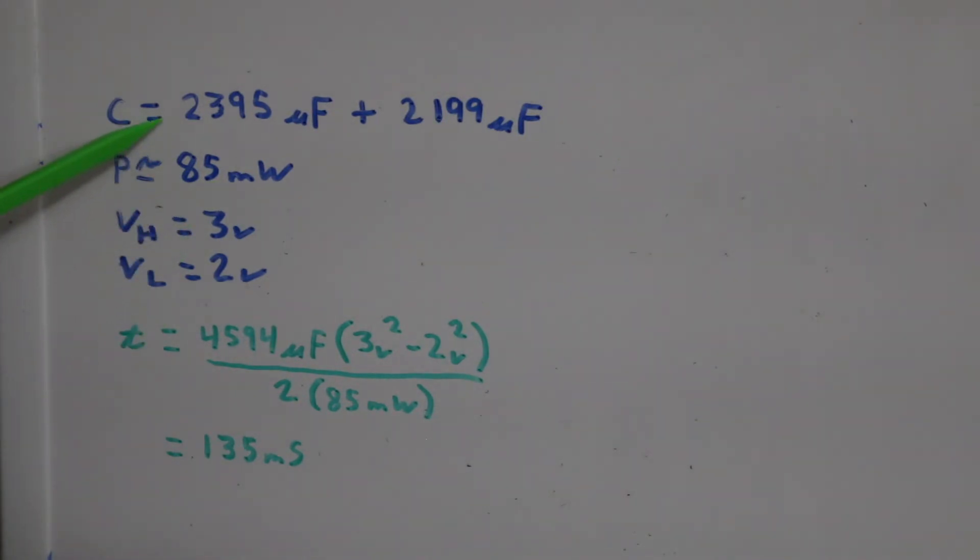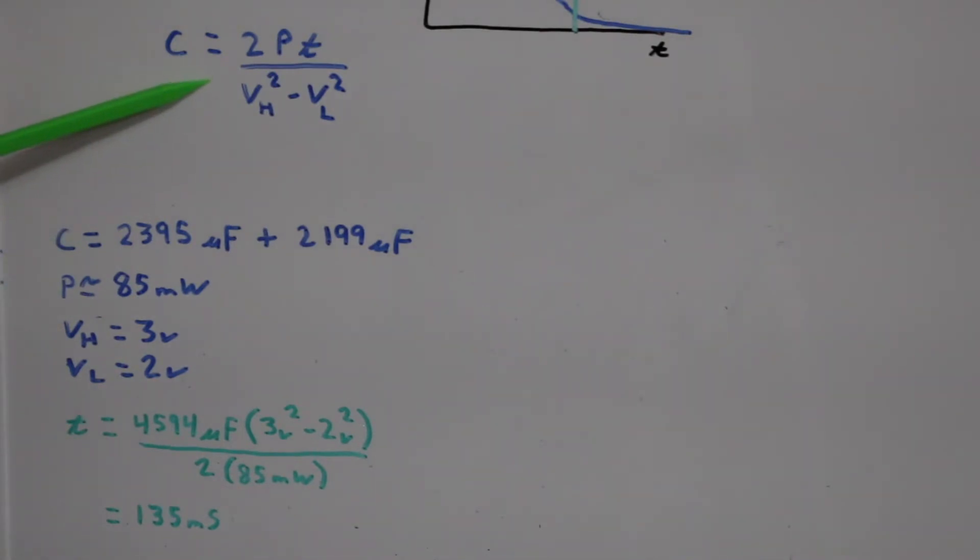And knowing that the capacitor will have to do this while the voltage falls from 3 volts to 2 volts. Plugging these values into the formula and solving for time, I should be able to keep powering my load for about 135 milliseconds.